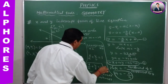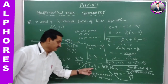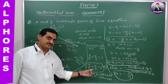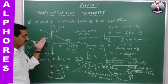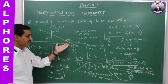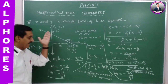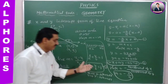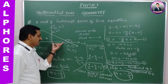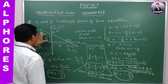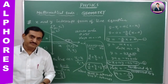So this is the final equation — X by A plus Y by B is equal to 1 — which is the line equation with X and Y intercepts. Its relevant graph is shown clearly: this is the straight line. We can verify: X intercept is A, Y intercept is B. This is the straight line equation in X and Y intercept form.